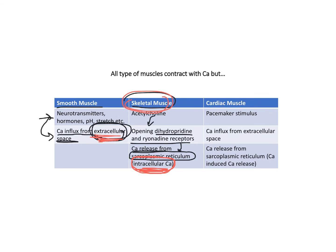In cardiac muscle, the stimulus comes from pacemaker cells, which cause calcium influx from the extracellular space like smooth muscle. But then it also leads to calcium release from the sarcoplasmic reticulum like skeletal muscle — this is called calcium-induced calcium release. So cardiac muscles use both extracellular calcium and intracellular calcium. The extracellular calcium influx induces the intracellular calcium release. In short: smooth muscle uses extracellular calcium, skeletal muscle uses intracellular calcium, and cardiac muscle uses both.